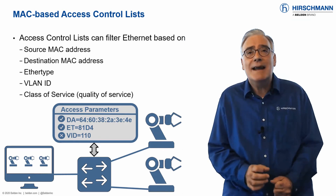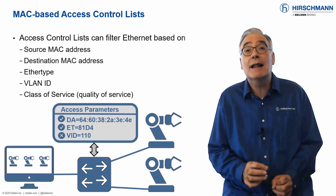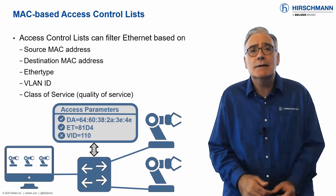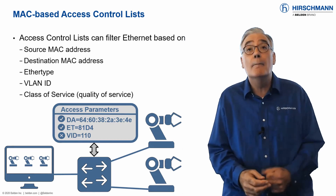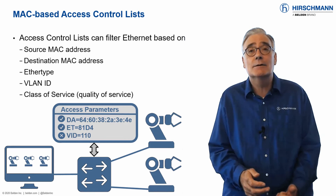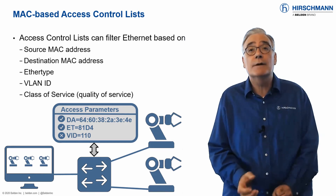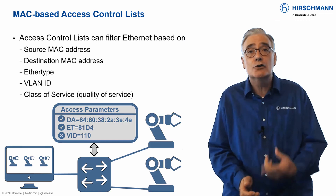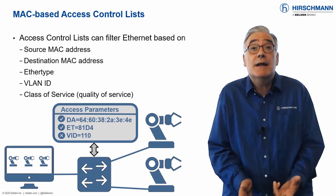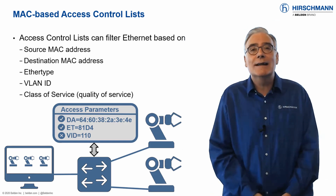This makes it simpler to create MAC-level ACLs. Basic ACLs support filtering on MAC addresses. Advanced ACLs support filtering on VLANs, traffic type, time of day, and other criteria.